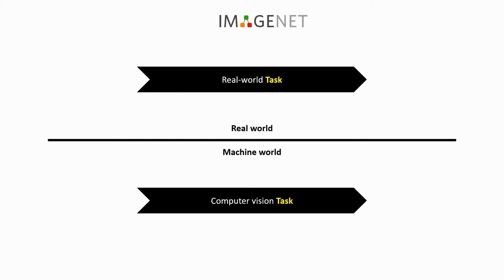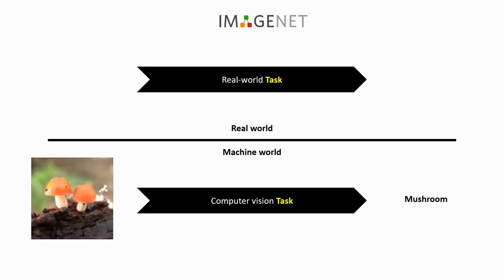One of the most famous machine learning competitions is the ImageNet Large Scale Visual Recognition Challenge, where one task consists in correctly labeling images from a large list of possible classes — for instance, identifying this image as a mushroom. This is a classification problem, framed in a very machine-friendly way. We are looking for a mathematical relationship between an input matrix representing an image and an output vector representing the probability of belonging to certain classes.